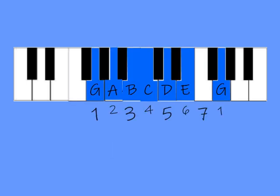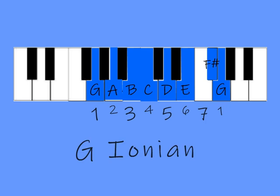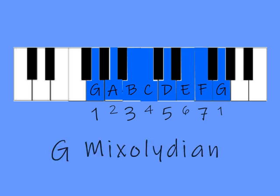G, the 5th note, normally has 1 sharp. But in the C scale, its sharp is gone. G in this position is called G Mixolydian, the dominant 7th scale.